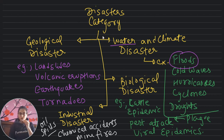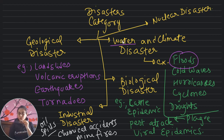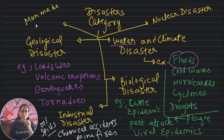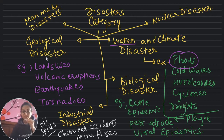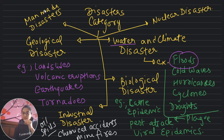So in total we have six categories of disasters: water and climate, geological, biological, industrial, nuclear, and man-made. Fire in a building can also be an example of a man-made disaster. Now, how will you define disaster management? Disaster management means managing the disaster in a way that brings down the loss in the society. It is a combination of planning, implementing measures, coordinating, and organizing in order to bring down the loss due to the disaster.